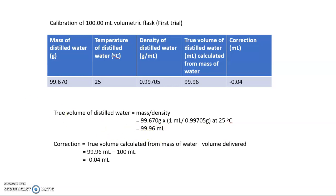Once you get the true volume of distilled water, we do the correction. Correction is the true volume calculated from mass of water minus volume delivered. True volume here is 99.96 ml minus the volume delivered. Because we use a 100 ml volumetric flask, the volume delivered will be 100 ml. So 99.96 minus 100 ml — the correction will be negative 0.04 ml.